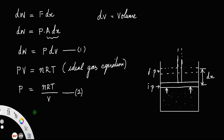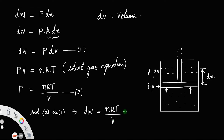If you substitute equation two into equation one, you will get dW is equal to — instead of P, you can write nRT by V, dV. Since the process is an isothermal process, the temperature remains constant.